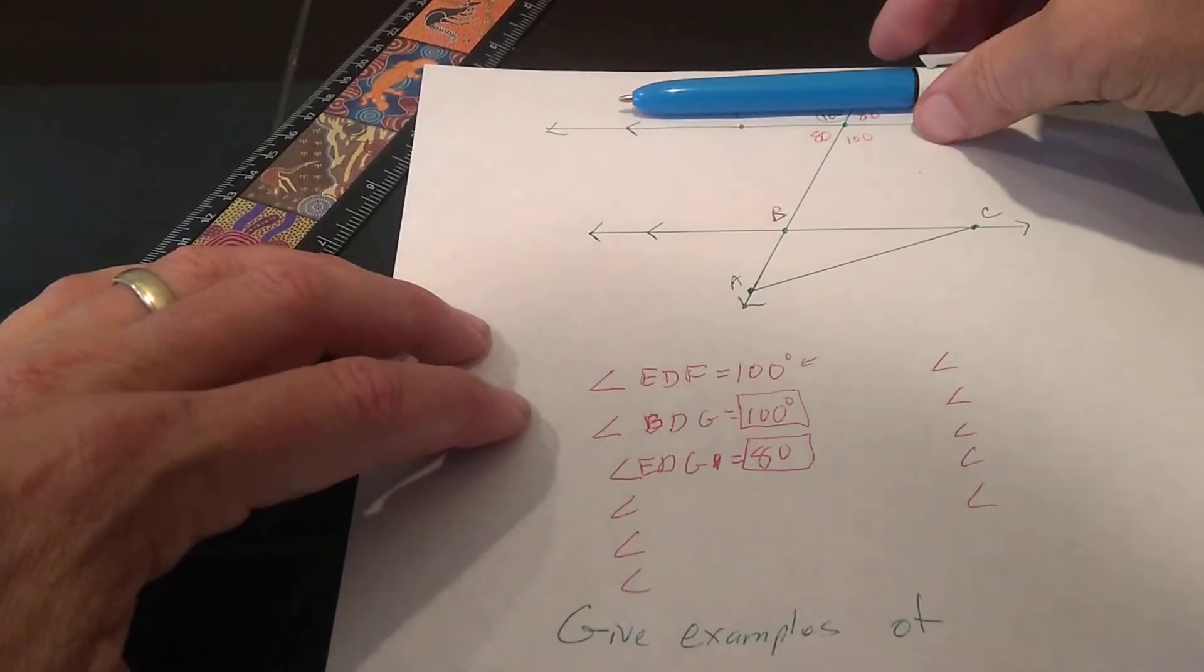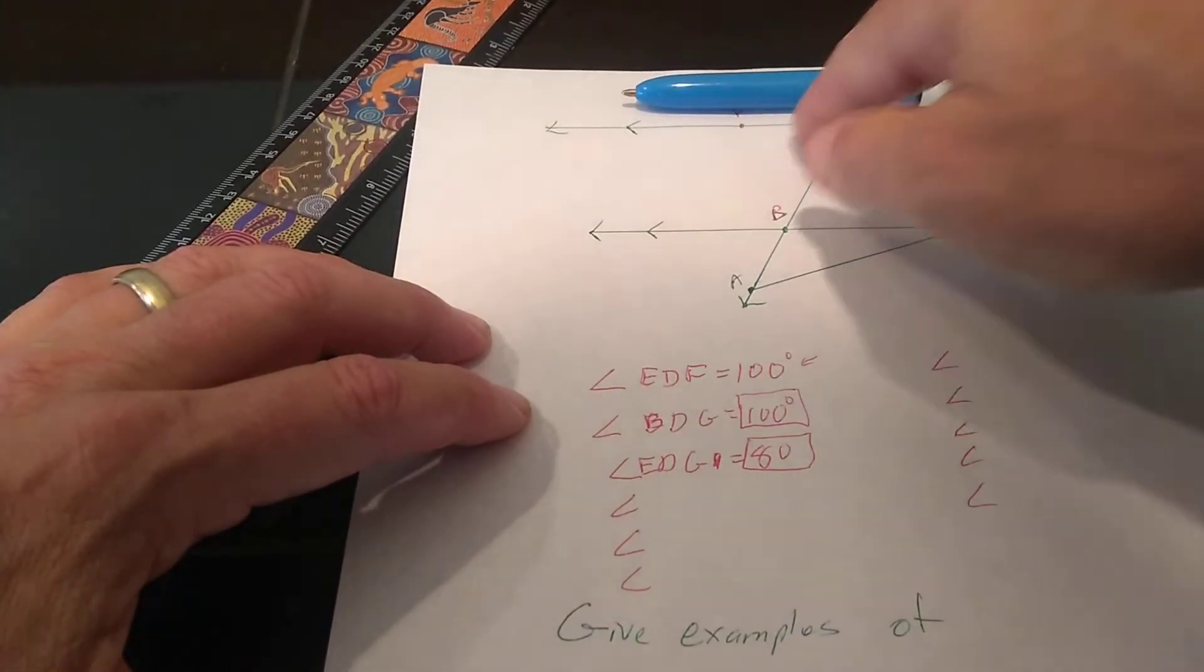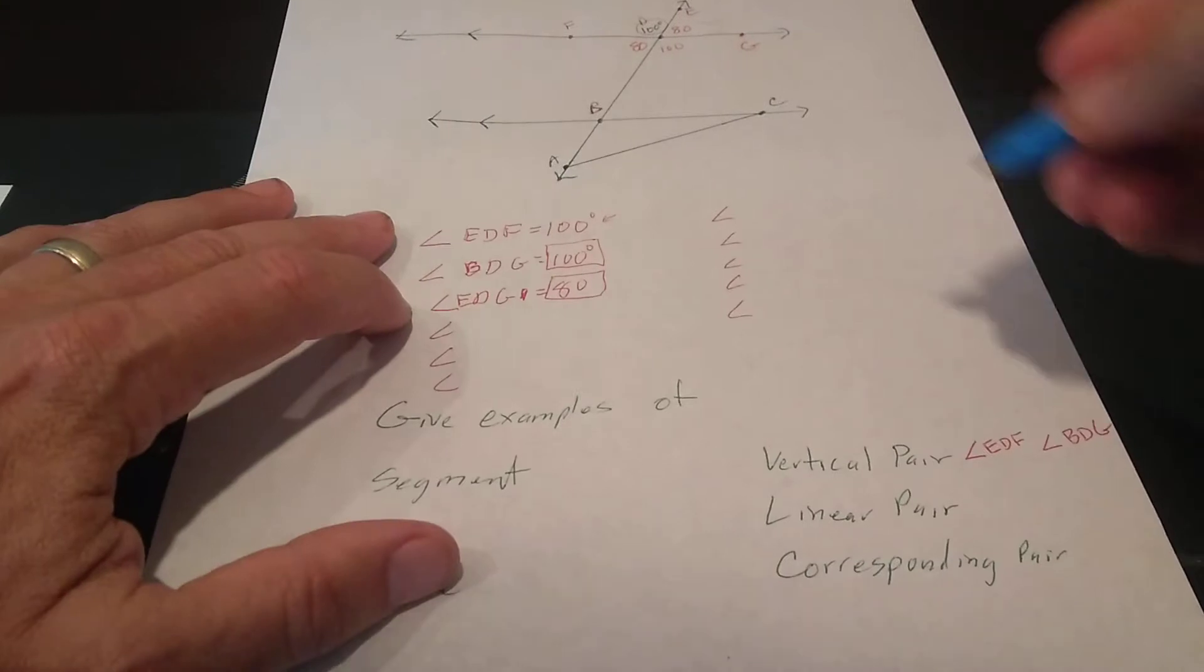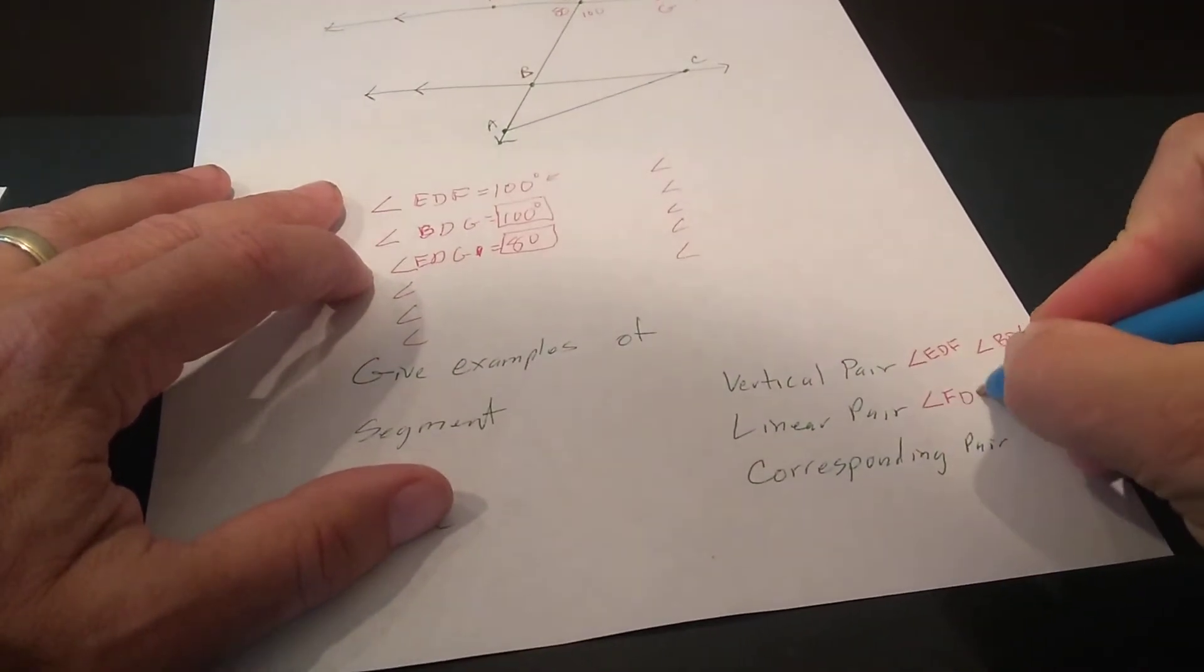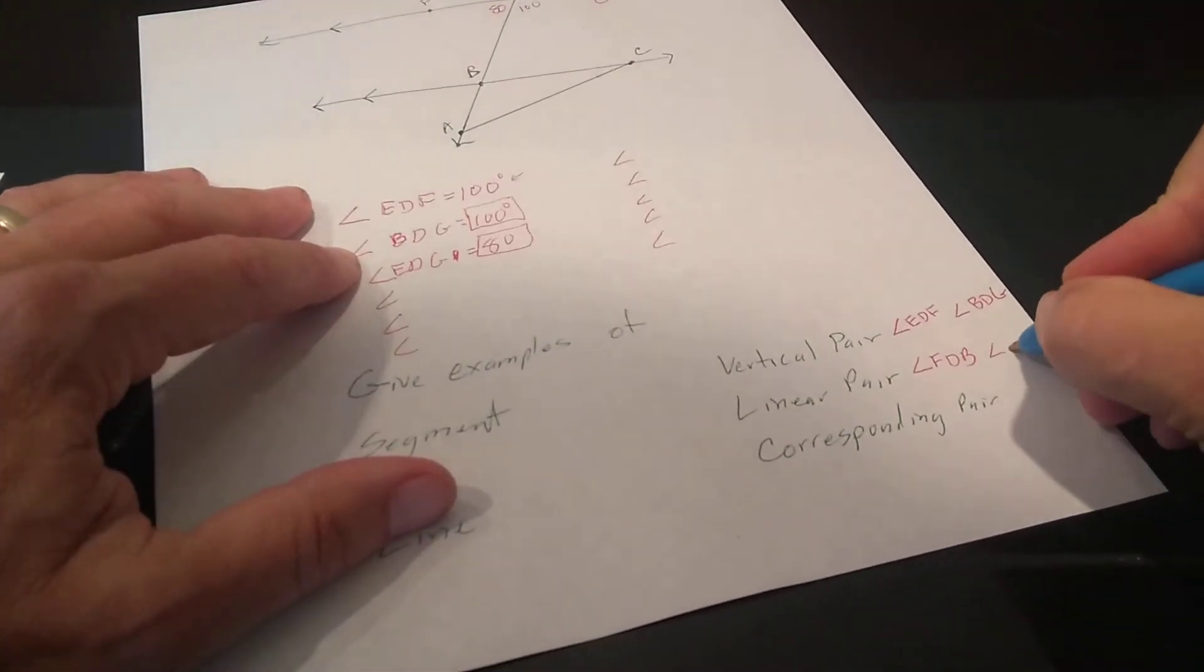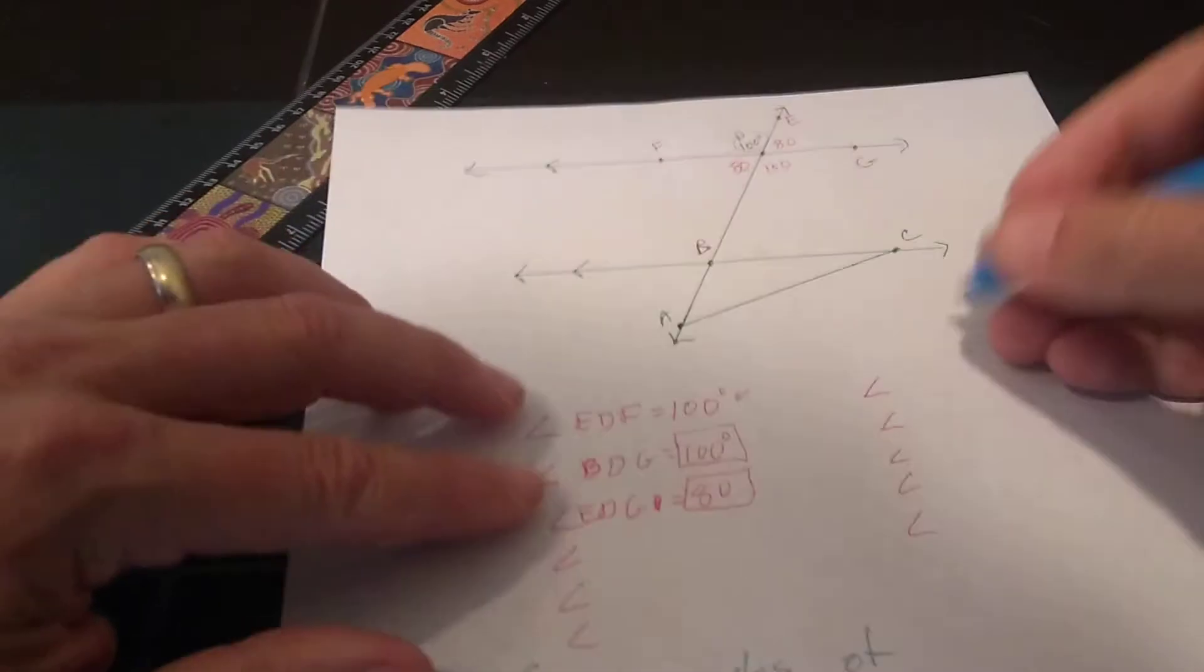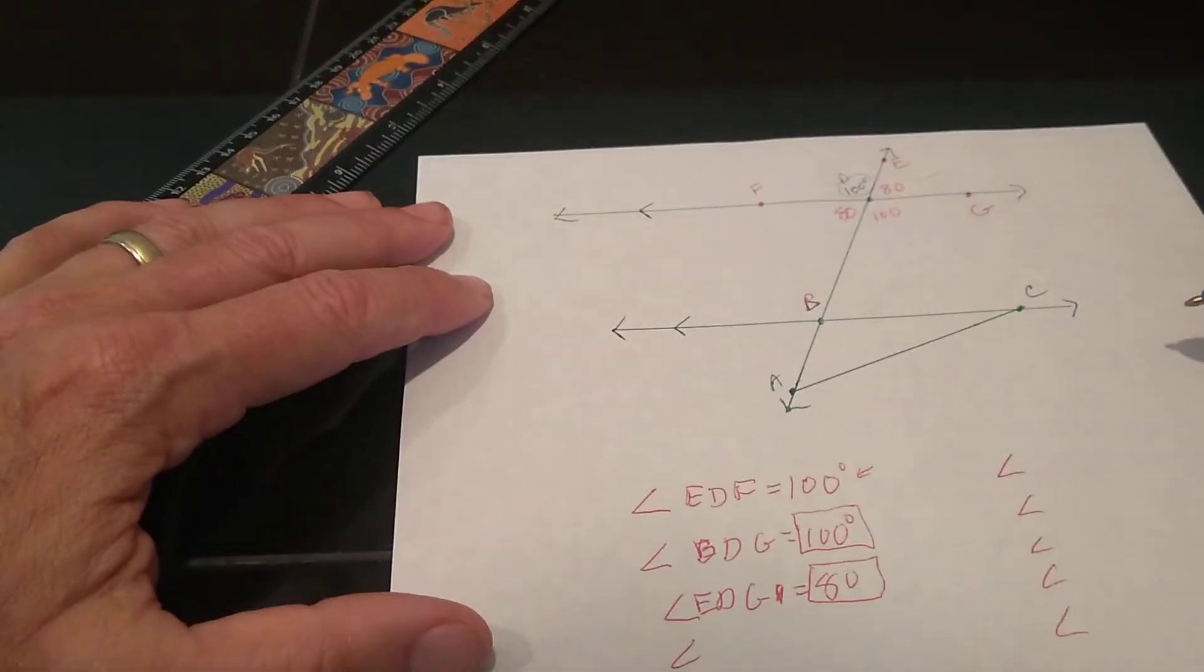Anytime I got a straight line, I got a linear pair. So like this 80 and this 100, it's a straight line. That's a linear pair. So I'm going to go ahead and throw that example down here. That's FDB FDB. And the other one is BDG BDG. That is, that's a linear pair.